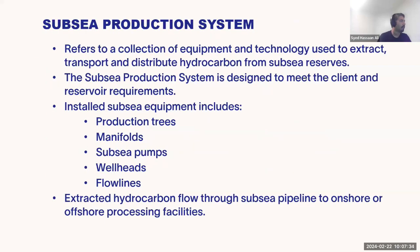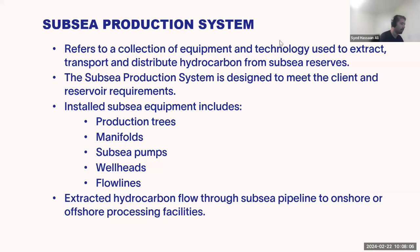A subsea production system is a collection of equipment and technology required to extract oil and gas — hydrocarbons — from subsea reserves. Subsea production systems are sometimes very customized: customized to the customer, to a particular field, and to the operating conditions. Some subsea production systems are developed specific to a geography, depending on depth, natural calamities, and conditions such as ice.